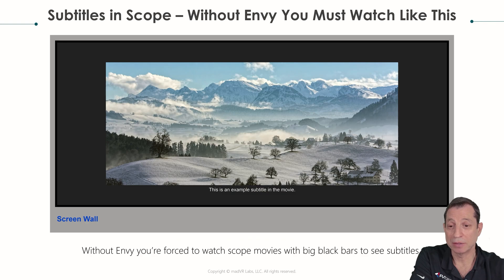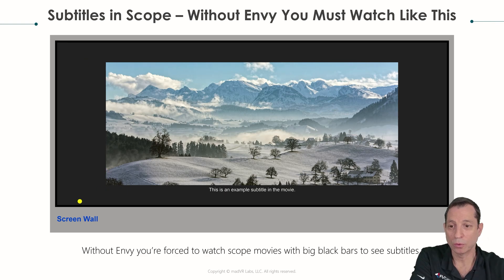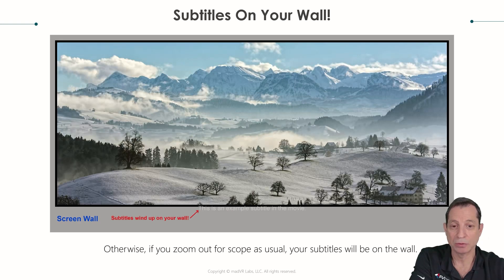Moving on to subtitle management. With a scope screen and a scope movie, before zooming out you see black bars on all four sides. When you zoom so the corners reach the corners, the image bottom moves down, and your subtitles wind up on the masking and on the wall. The same thing happens with any closed captions or titles at the top.